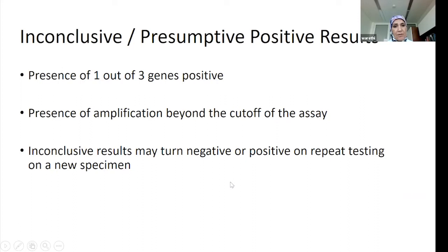This explains the inconclusive result — the presence of one out of three genes as positive. It can happen either early on in the infection or later on when the infection is fading.